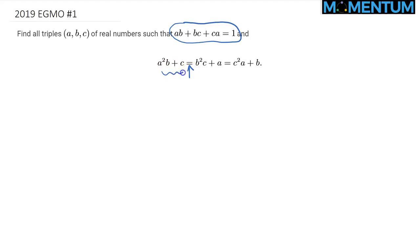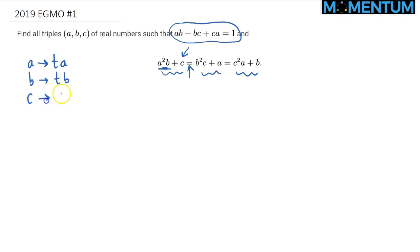Noticing that each of these three expressions are not homogeneous — in the sense that this one has exponent degree three. If you replace A with T times A, B with T times B, and C with T times C, we just realize that the expressions are not homogeneous. But with a simple trick, we can make it homogeneous.